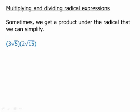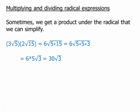Sometimes we get a product under the radical that we can simplify. So when we multiply these, the 3 times 2 will give us a 6 outside the radical. Under the radical, we're going to have 5 times 15. Rather than multiply that, I'm going to break the 15 into factors. When I do that, it becomes very clear I have a 5 times 5. I can take a square root of that. So I get 6 times 5 times √3, which is 30√3.